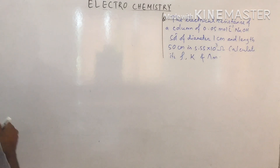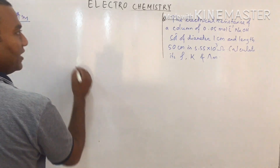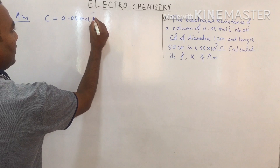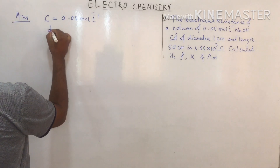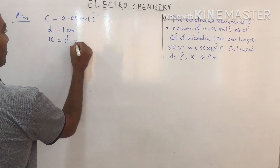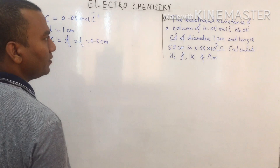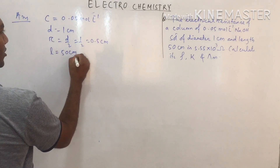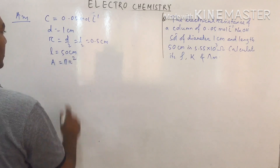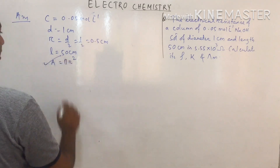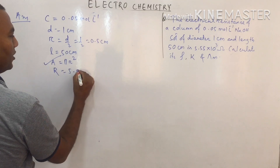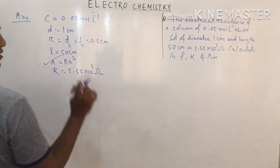Concentration = 0.05 mol/L is given. Diameter d = 1 cm, so radius = 0.5 cm. Length = 50 cm. Area = πr² formula is used. Resistance R = 5.55 × 10³ ohm is given. Now we can calculate resistivity.